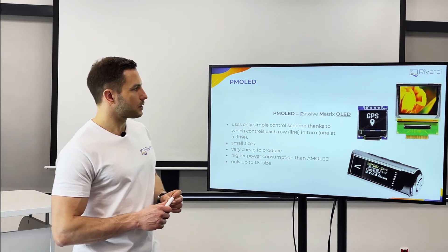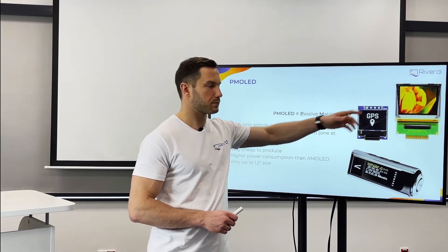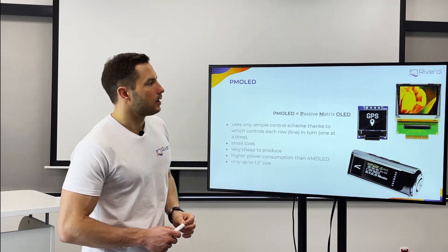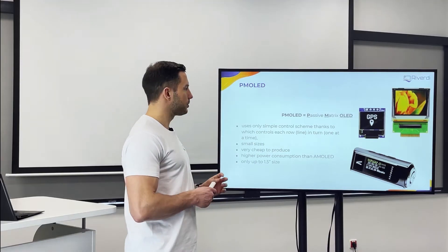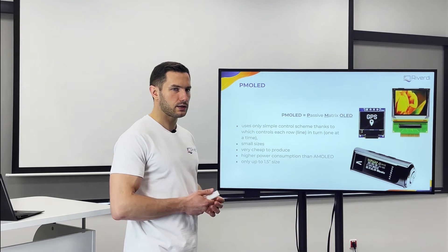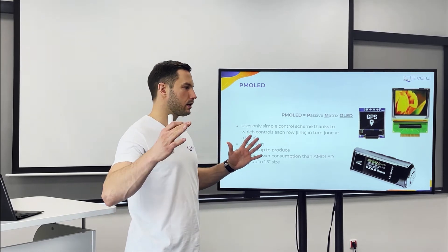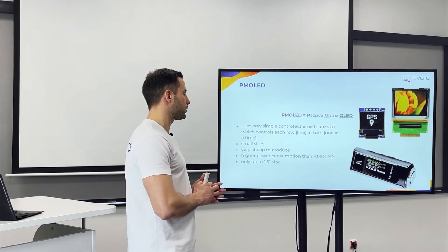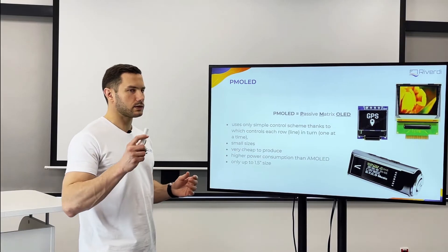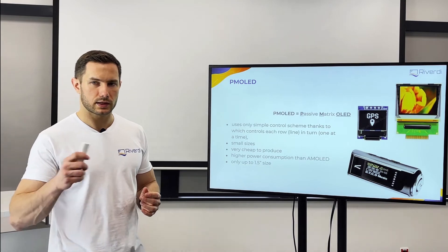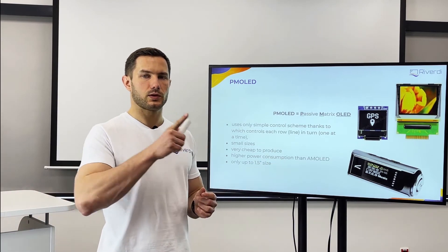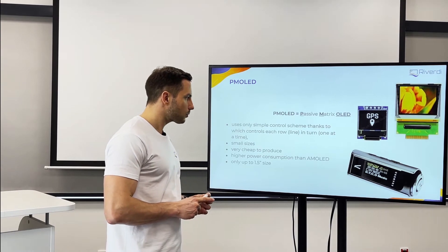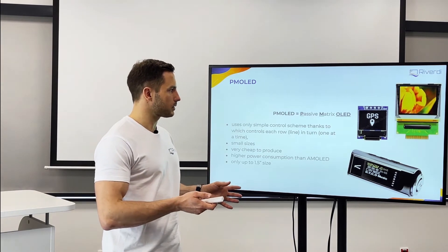With passive matrix OLED displays we can also make full color displays — no color filter needed, as color pixels are built in, but they are small. The limitation, similar to STN displays, is that we cannot make large displays because the resistance of the lines becomes too high, causing big differences in contrast and brightness depending on which pixel is switched on.